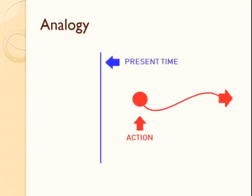It's very self-explanatory. The vertical blue line indicates the present time or the current situation, and the red colored dot or ball indicates action. From the figure, you can easily see that there is an action — an event or incident — and it is being continued for some time in the future. So in your life, if there is such a situation and you want to describe it in English, make use of the future continuous tense.